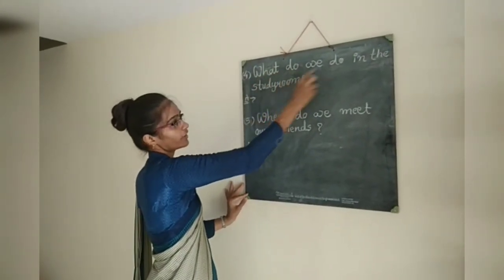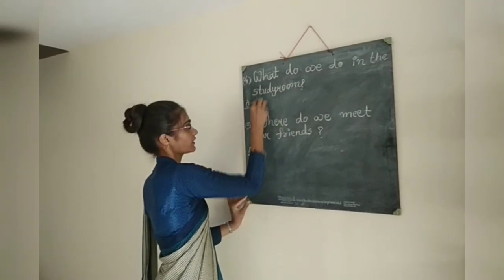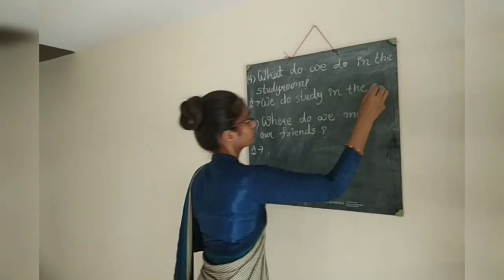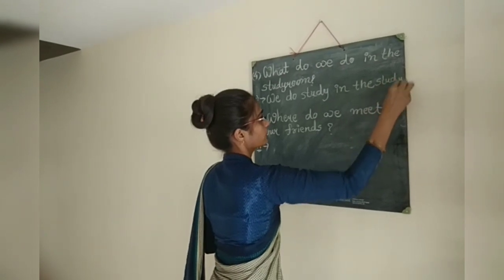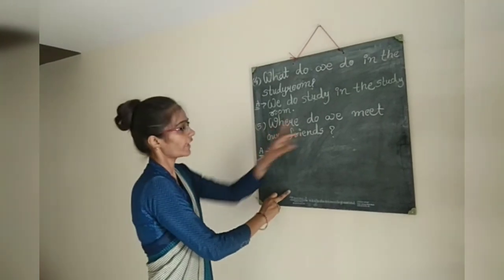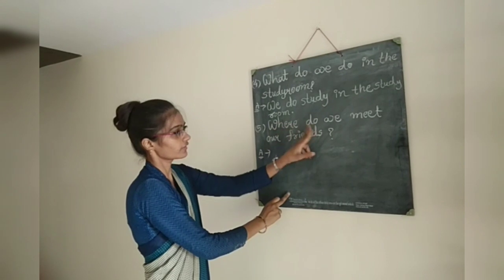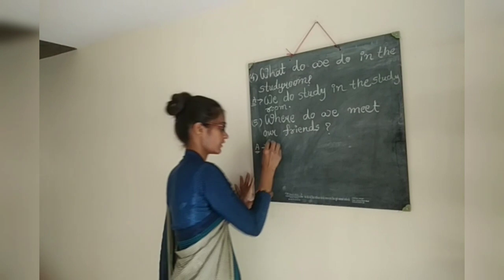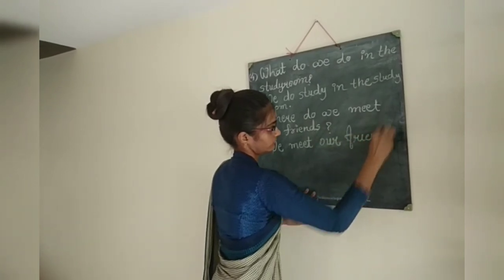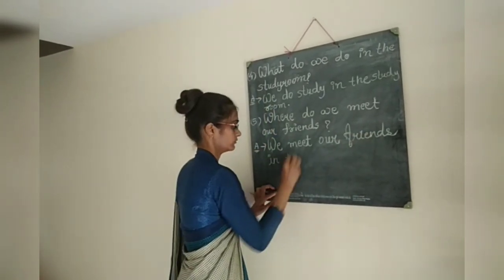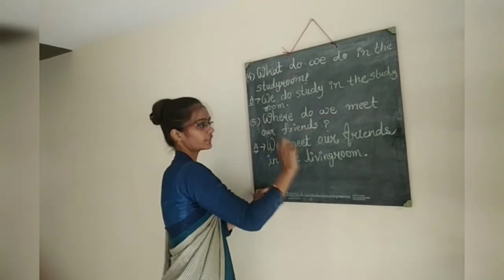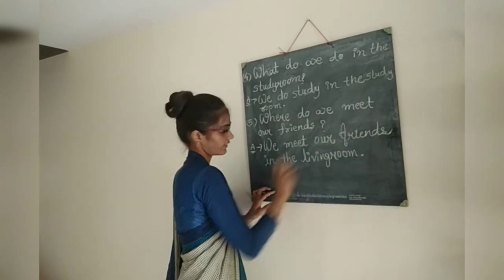Question number 4: What do we do in the study room? The answer is: We do study in the study room. Number 5: Where do we meet our friends? The answer is: We meet our friends in the living room.